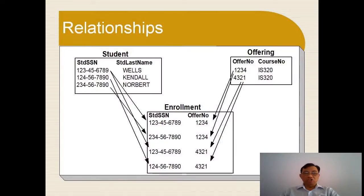Now let me go to relationships. A relationship is the link between or among tables. You can use relationships to combine tables using matching values. A relationship can involve many tables — maybe more than 100 tables. But you can use relationships to link the data across the tables. In this case, you link the Student table with Enrollment, and you link Enrollment with Offerings.